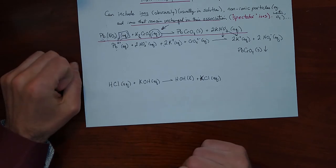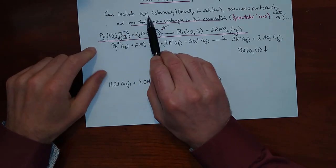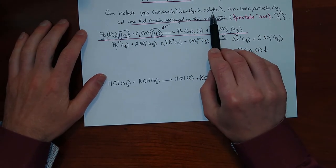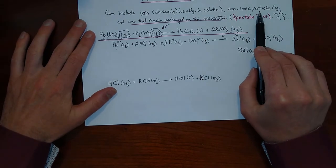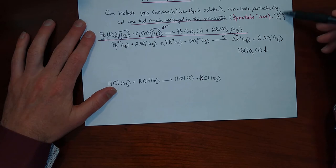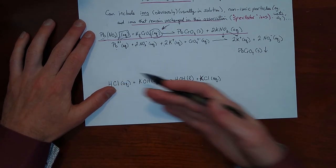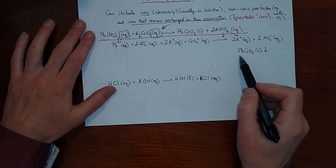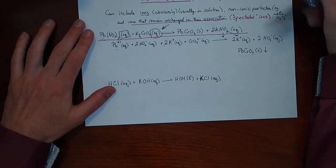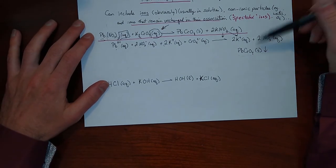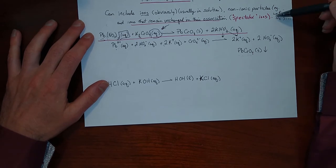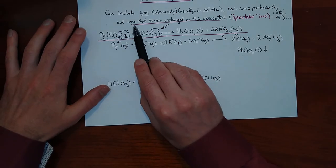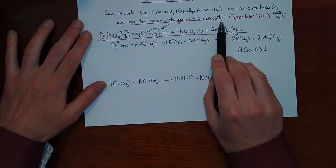So that is the ionic form of the equation, where we take every situation involving ions and write them as separate ions instead of as unique compounds. Ionic equations can include the ions in solution, non-ionic particles like water or oxygen or other covalent compounds that are part of the reaction, and also ionic substances like lead chromate that are not actually ionized — not split into their ions — in which case you write them as their own complete unit.